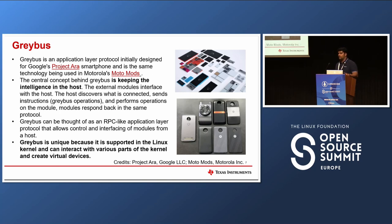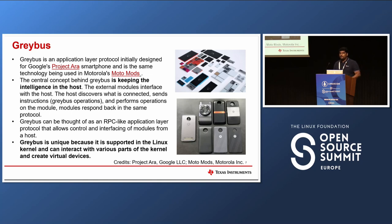Greybus has strong roots in the Linux kernel. The fundamental idea is keeping the intelligence within the host. The base smartphone has the processor and all the intelligence. The modules themselves — say a camera — do not have any intelligence. The application processor on the base module sends transactions over the Greybus protocol to these modules. The module performs the operation, like taking a picture, then sends back the data to the application processor. Greybus is like a remote procedure call protocol where you send RPC calls to a remote external module sitting on the UniPro bus, perform operations on the remote node, and return results to the application processor.